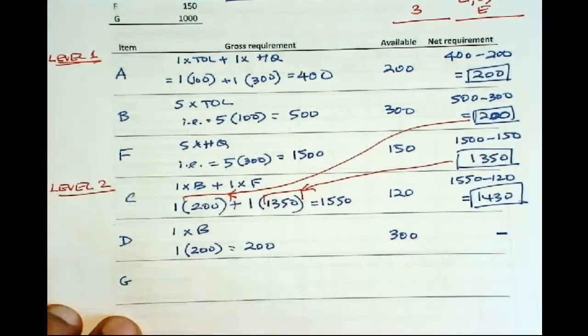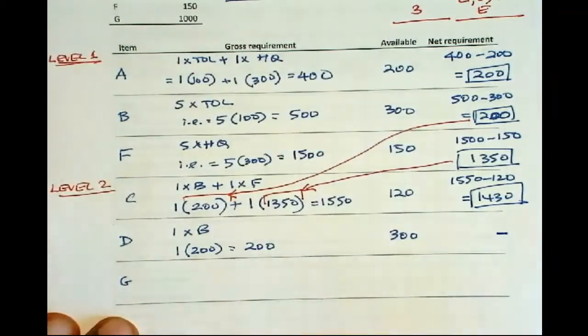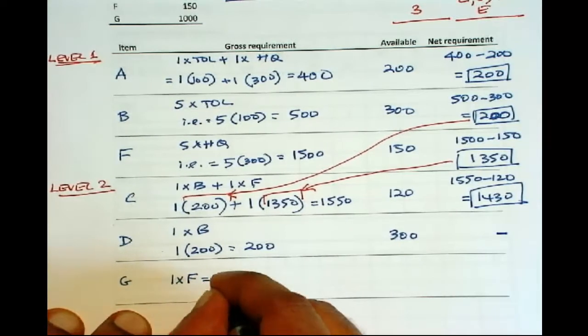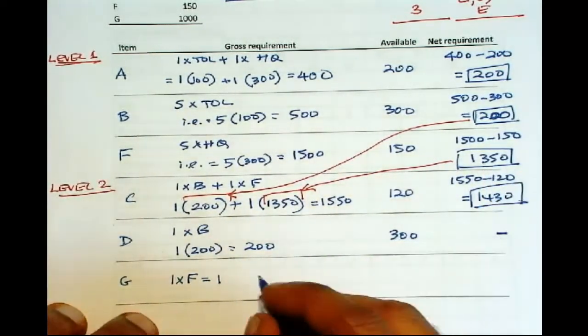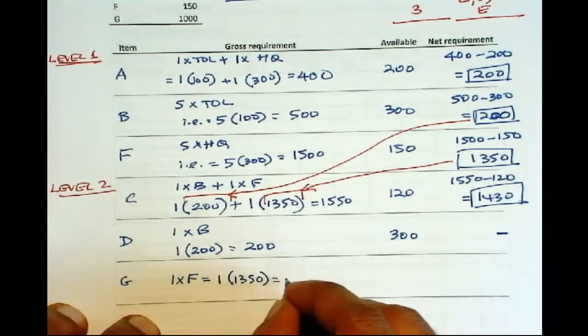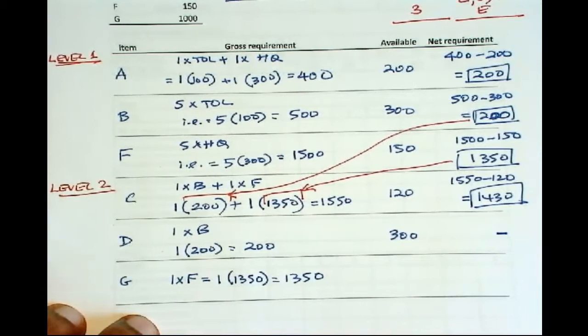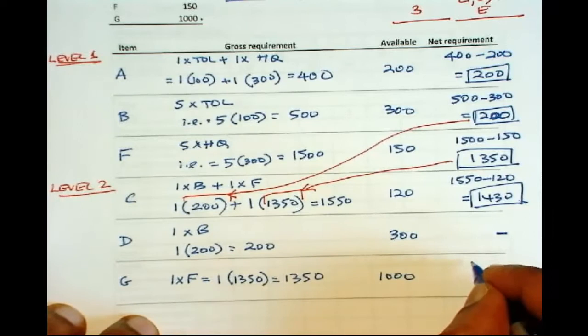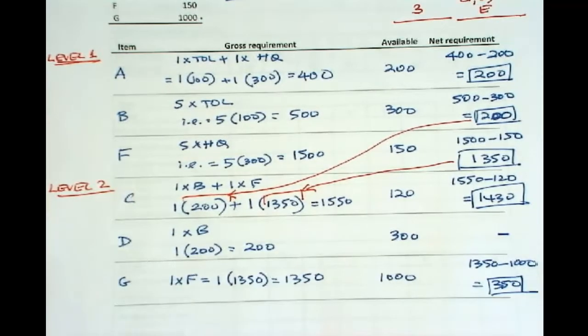And then we have G. We need 1 unit of G for each F. So 1 times F, so that is 1 times 1350. It is 1350, and we have 1000 of that available. So 1350 minus 1000 gives you 350. That is level 2.